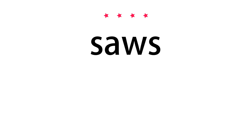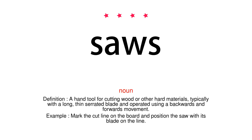Saws. Noun. Definition: A hand tool for cutting wood or other hard materials, typically with a long, thin serrated blade and operated using a backwards and forwards movement. Example: Mark the cut line on the board and position the saw with its blade on the line.